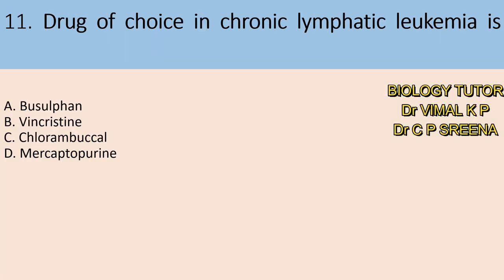Eleventh question: drug of choice in chronic lymphatic leukemia is — A. Busulfan, B. Vincristine, C. Chlorambucil, D. Mercaptopurine. Which is the answer? Here the answer is C — Chlorambucil.